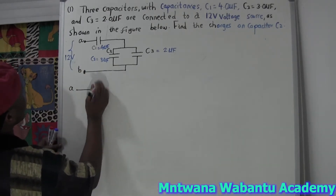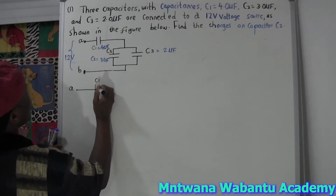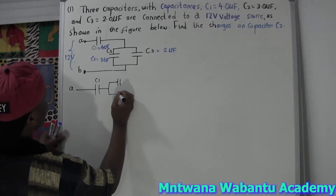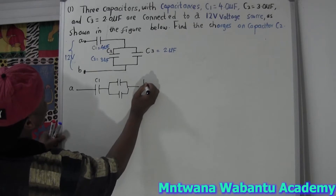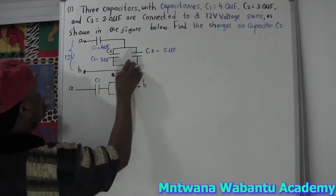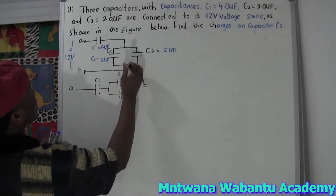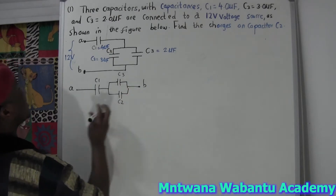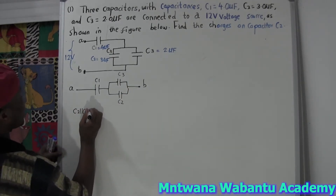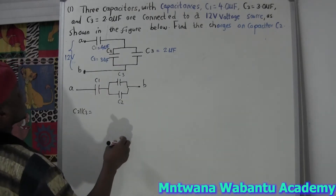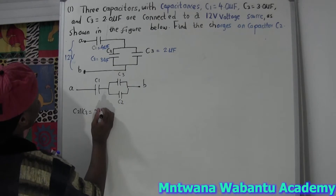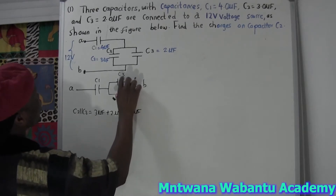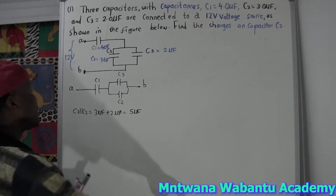Let me redraw the circuit. We have point A and point B. C1 is on one branch. C3 and C2 are parallel to each other. When they're parallel, you add them: C2 + C3 = 3 microfarad + 2 microfarad = 5 microfarad total.